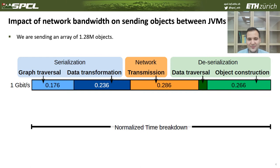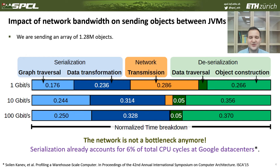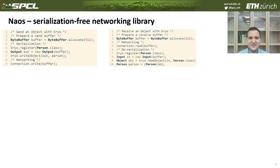To illustrate that, let's consider the following example. We'd like to send objects from one JVM to another — more than one million objects. In case of a one-gigabit interconnect, we would spend the same portion of time for serialization, for network, and for deserialization. However, once the network gets faster and faster, the time we spend on network actually becomes less than 1%, and then 99% of the time is spent on serialization and deserialization, which is our real bottleneck in communication.